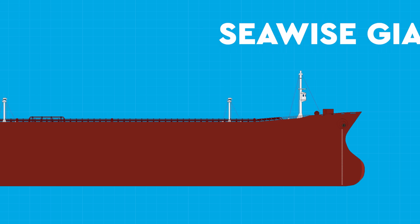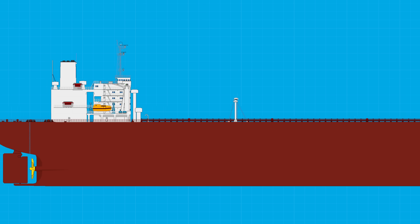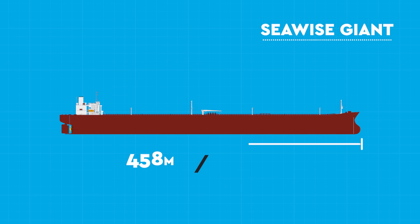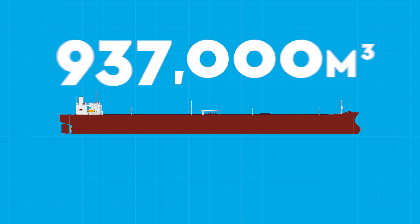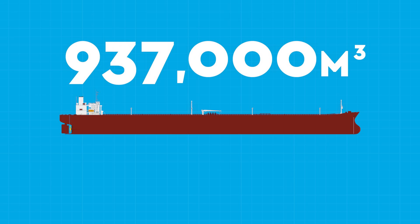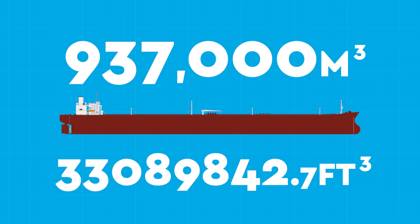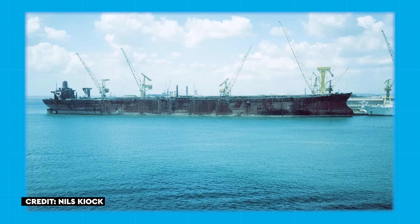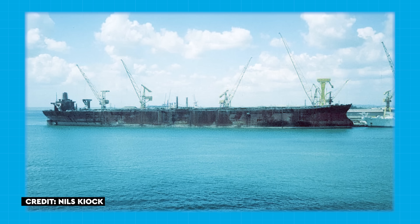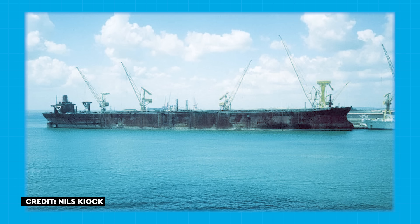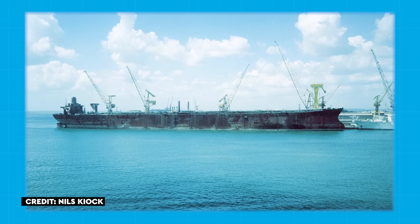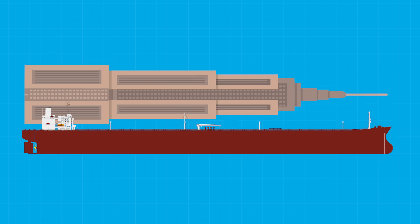Take the Sea-Wise Giant, which was constructed way back in 1979. The vessel was 458 metres or 1,504 feet long, 30 metres or 98 feet deep, and 69 metres or 225 feet wide, giving it a rough capacity of 937,000 cubic metres, or over 33 million cubic feet. It wasn't a practical ship, however. When fully loaded, it would sit 24 metres, nearly 75 feet below the ocean's surface, and it was so big, it couldn't navigate the English Channel, the Panama Canal or the Suez Canal, and it was longer than the Empire State Building is tall.